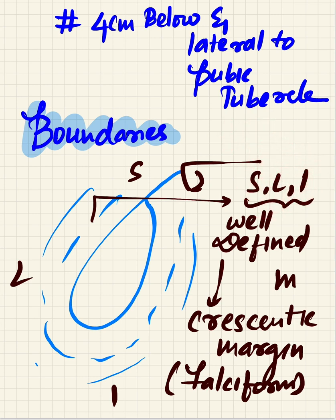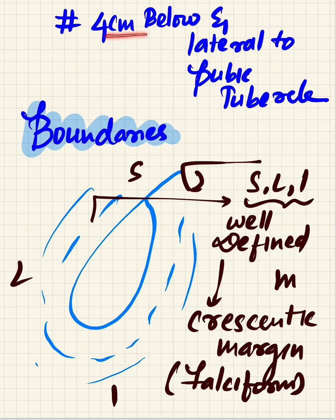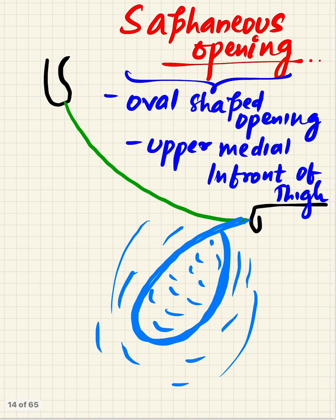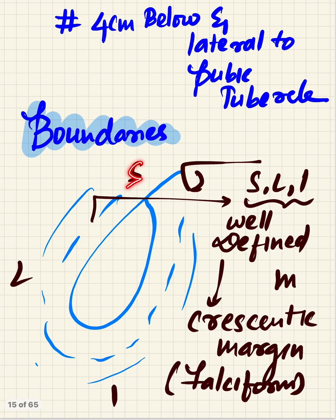Its location is 4 centimeters below and lateral to the pubic tubercle. This is the pubic tubercle — below and lateral to it. The saphenous opening has a superior, lateral, and inferior margin arrangement.